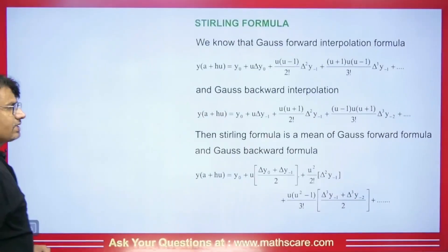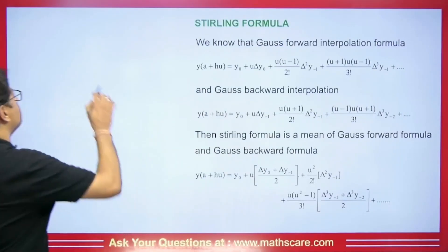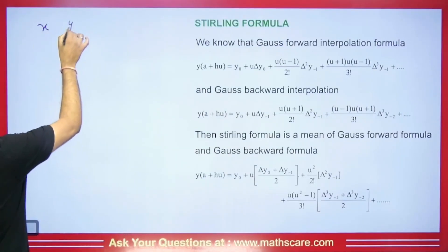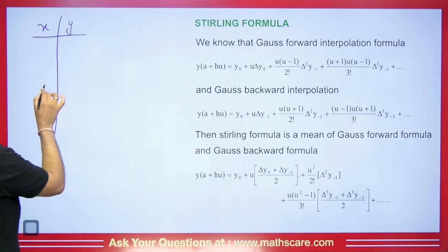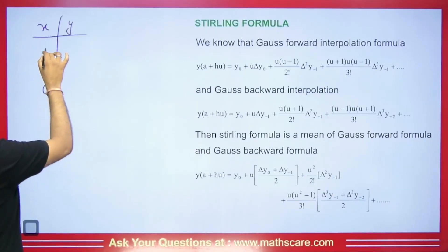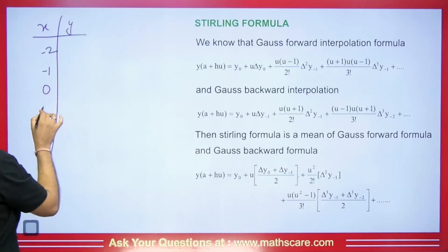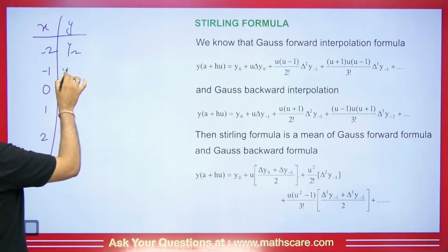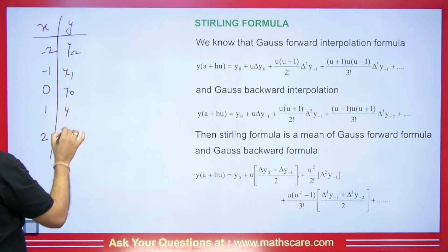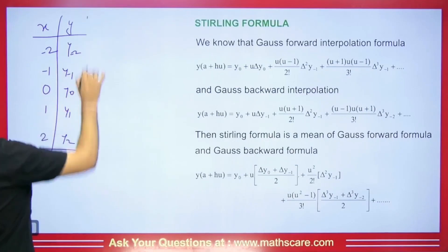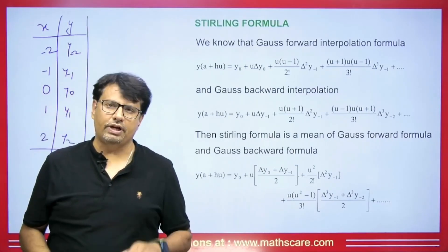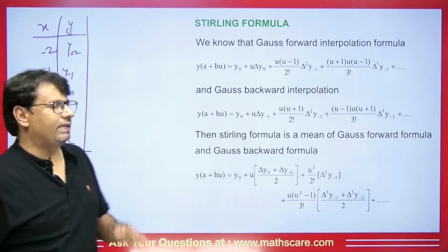When we talk about central difference, here we have x and y. Whatever is the center value, we show it as 0. Minus 1 and minus 2 on one side, and 1 and 2 on the other. So accordingly we have y₋₂, y₋₁, y₀, y₁, and y₂. Just before this, I uploaded a video on Gauss forward and Gauss backward — see that as well.